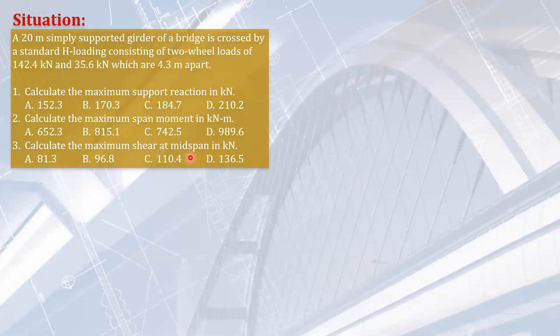So let's see how to solve this problem. There are two moving loads. The distance apart is 4.3 meters. The loads are given. The span is very long compared to the distance between the wheels. So this is very obvious that the loads are on the span when the maximum shear and moment will occur. There is a formula for this.